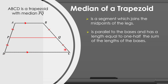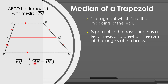The median PQ is parallel to both bases of our trapezoid. The measure of the median is one-half the sum of the lengths of the bases. Thus, PQ is equal to one-half of the sum of side AB and side BC.